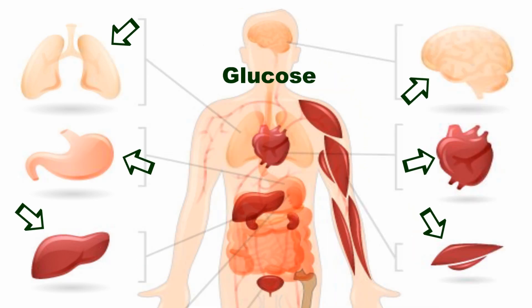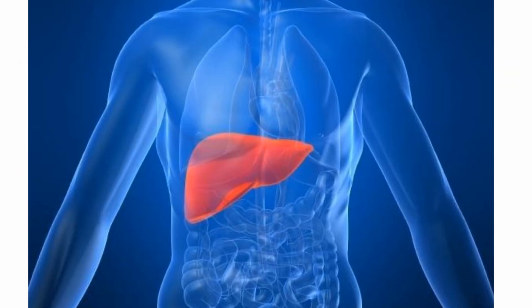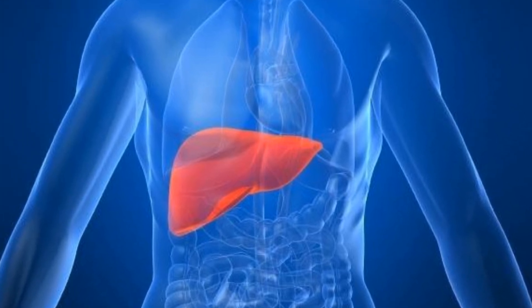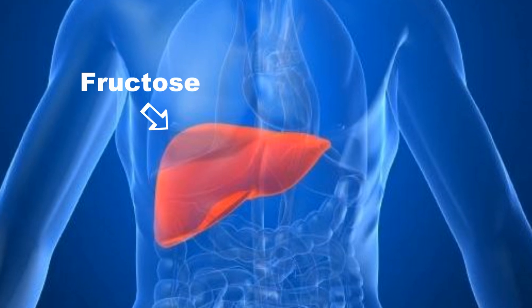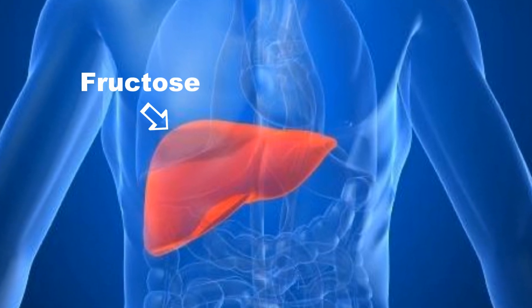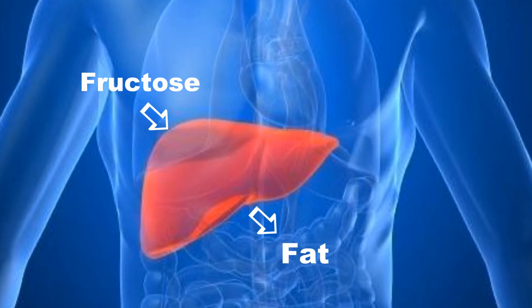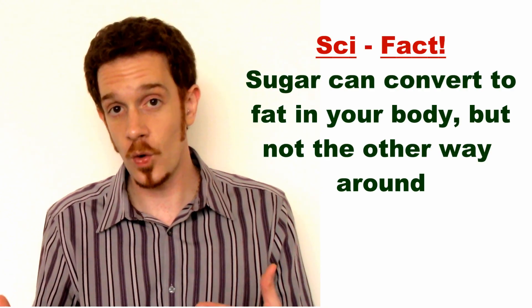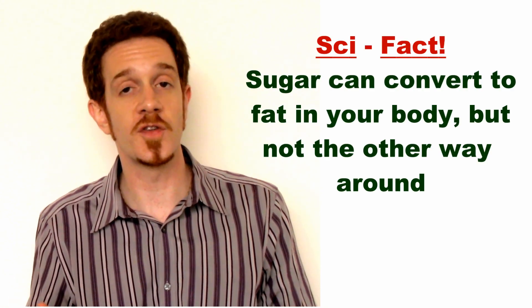Glucose can be extracted from the blood by virtually any cell in the body. Fructose on the other hand can only be sent to the liver. Now in times where energy is abundant, fructose will eventually get converted to fat. And in fact, any excess glucose will also make its way to your liver, and once your glycogen stores are built up, will also be converted to fat. And therein lies the problem — when you ingest too much sugar, fructose or glucose, it will ultimately get converted to fat if you're not burning it for energy.